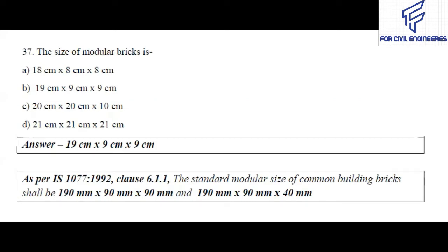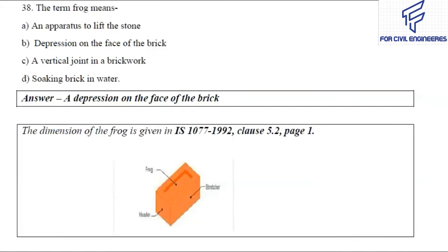Question number 37: The size of modular brick is — the right answer is option B, which is 19 cm × 9 cm × 9 cm. As per IS 1077:1992 clause 6.1.1, the standard modular size of common building bricks shall be 190 mm × 90 mm × 90 mm and 190 mm × 90 mm × 40 mm. So as per IS 1077, the right answer for this question is option B.